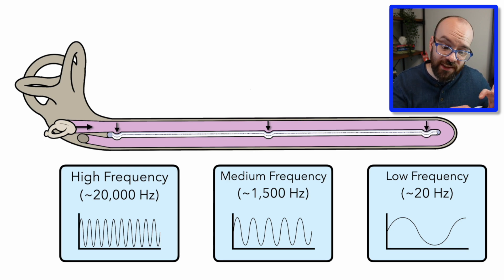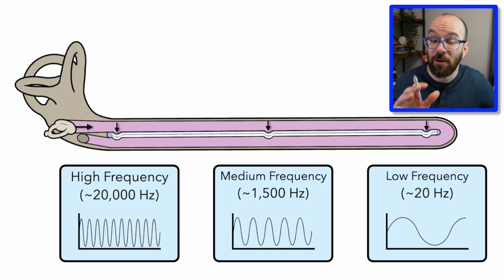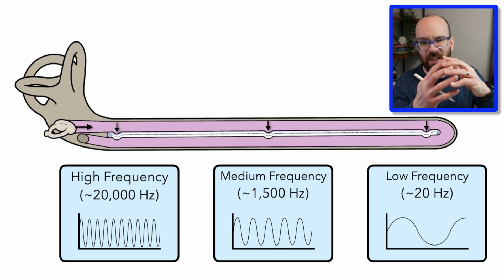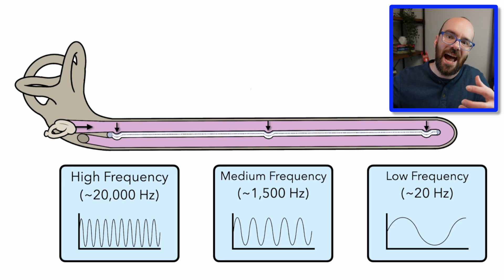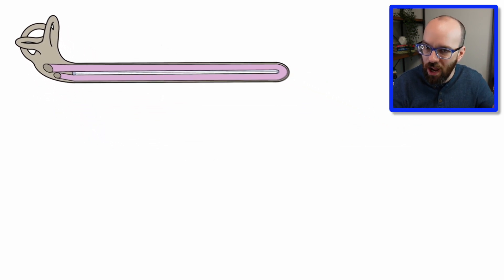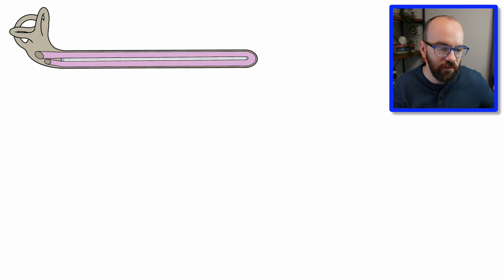The standing waves are always pushing down on the scala media. That's going to cause the hair cells to get bent over, sending an action potential — the nerve signal — to the brain. Let's zoom in on a cross-section so we can see what the organ of Corti and hair cells actually look like.